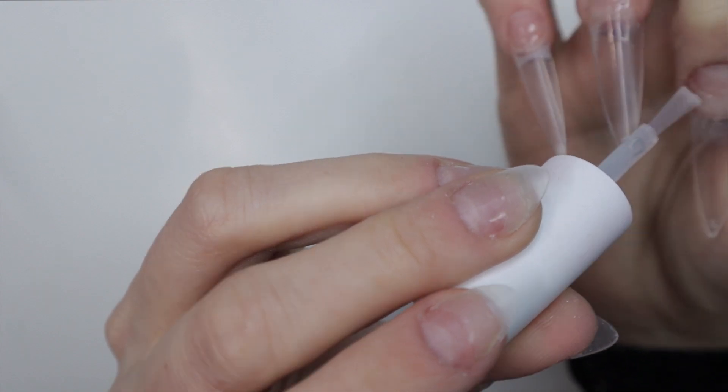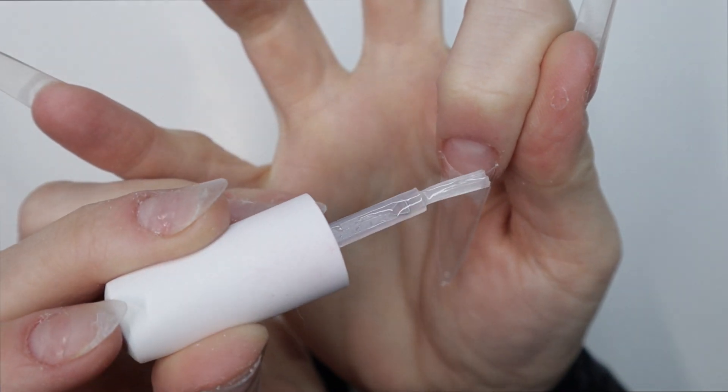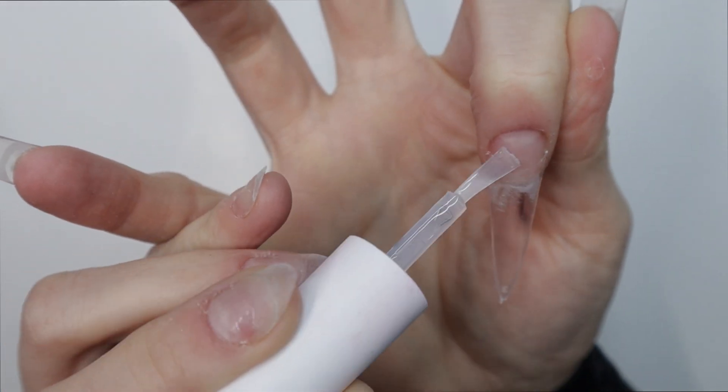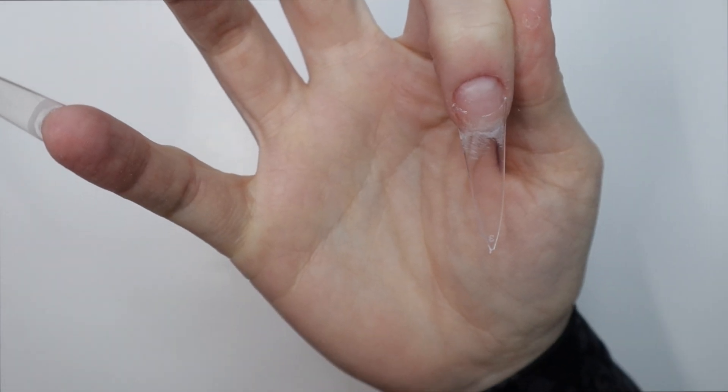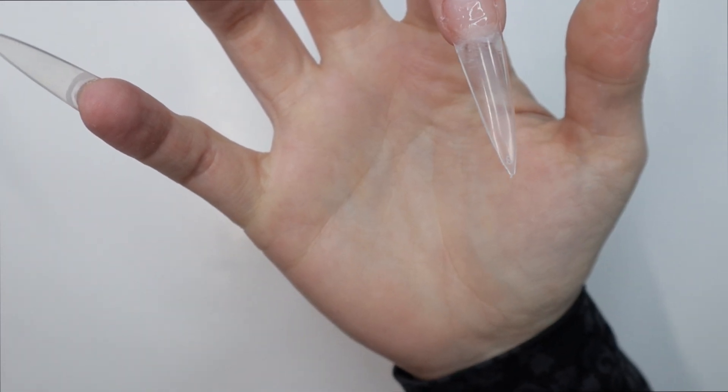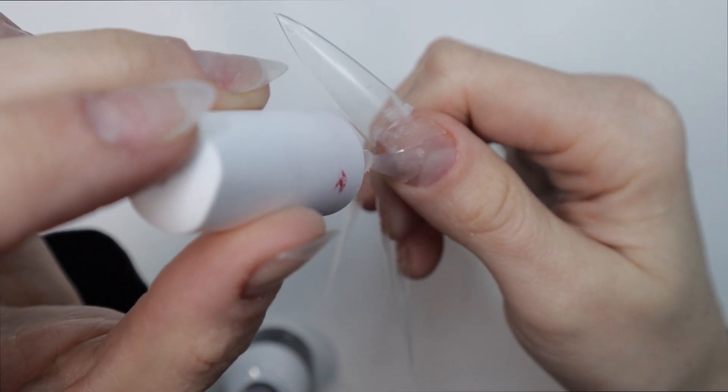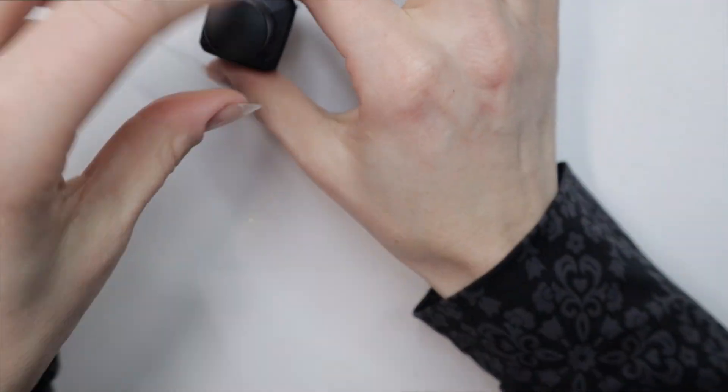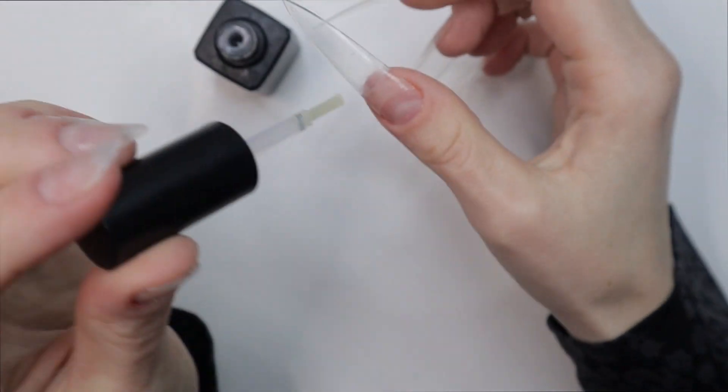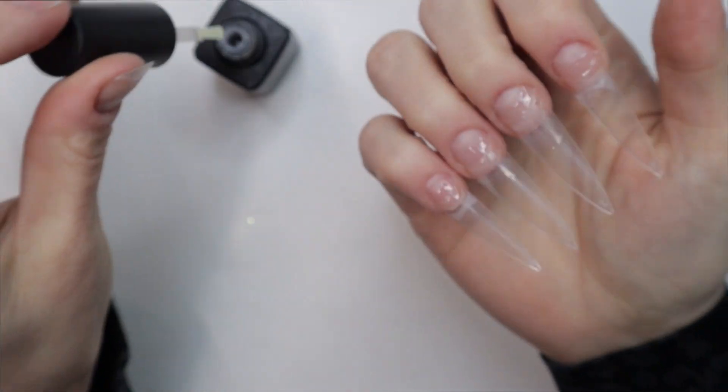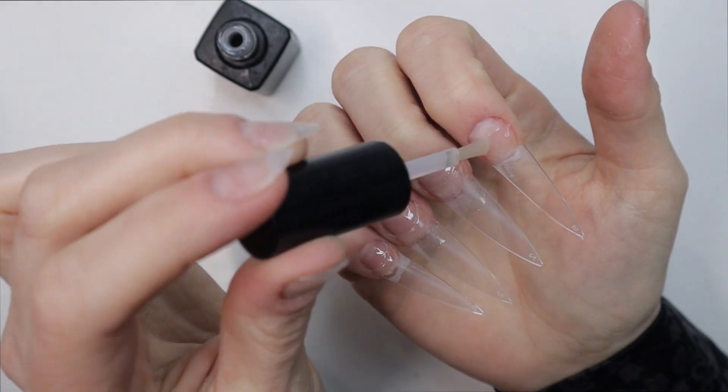Then I will take a resin activator. So you can use a regular dip activator or a resin activator. They sell the resin activator at Sally's. I will brush that right on top of the dip base that I just applied over the seam, and that activator gives it like an instant hardening reaction to that nail glue.